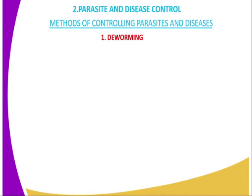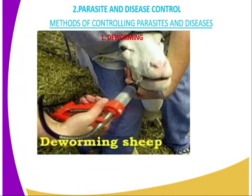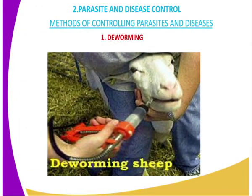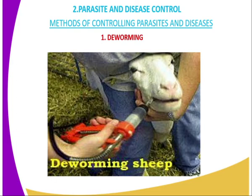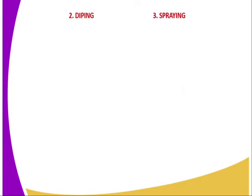The first method of controlling parasites and diseases is deworming. During deworming, you can use an appropriate tool to introduce dewormers into the livestock. There is a diagram here of a person doing deworming in sheep, using a drenching gun to introduce the anti-helmintic drugs, which are meant for controlling worms.